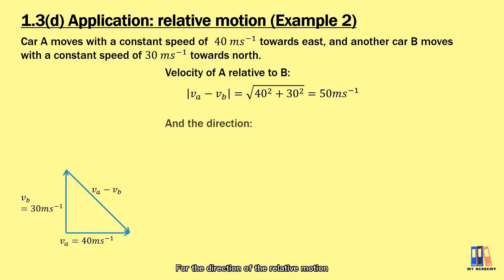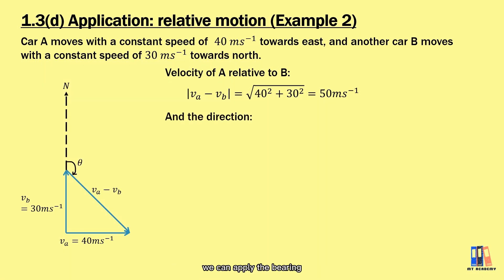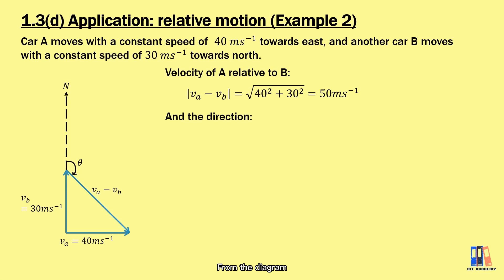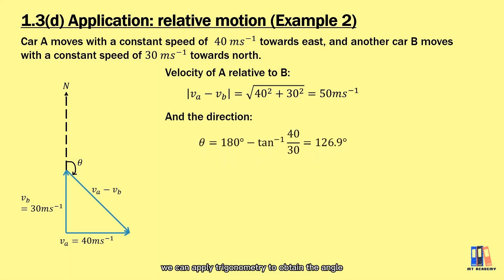For the direction of the relative motion, we apply the bearing. We draw a line pointing to the north pole at the tail of the vectors. From the diagram, we can apply trigonometry to obtain the angle, which is equal to 126.9 degrees.